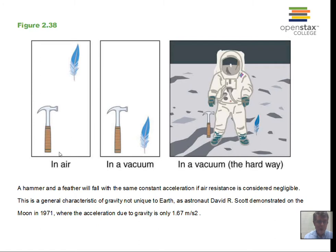On the Earth, the object that's more dense has less effect on its motion due to air resistance. So the hammer drops rapidly, the feather floats to the ground, and they don't hit at the same time — that's due to air resistance. Without air resistance, if two objects are dropped at the same time from the same height, they will hit at the same time.